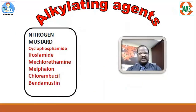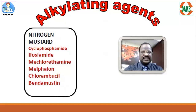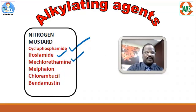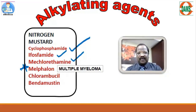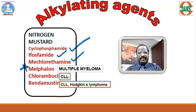In the nitrogen mustard group, we have discussed cyclophosphamide, ifosfamide, and mechlorethamine. Next, melphalan is a very important alkylating agent useful for treatment of multiple myeloma. Chlorambucil is useful for CLL (chronic lymphoid leukemia), and bendamustine is useful for CLL as well as Hodgkin's lymphoma.